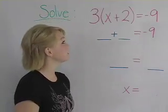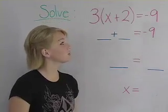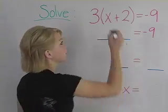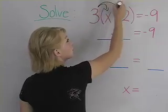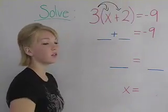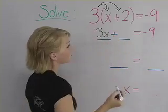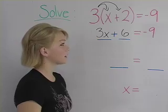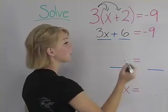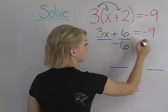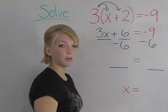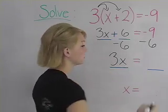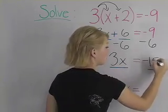Here we're going to solve the equation 3 times the quantity x plus 2 equals negative 9. The first step is to distribute the 3 throughout the expression, which gives us 3x plus 6. Now we want to get 3x by itself on one side, so we're going to subtract 6 from both sides, which gives us 3x equals negative 15.